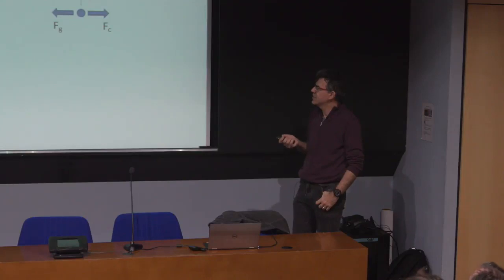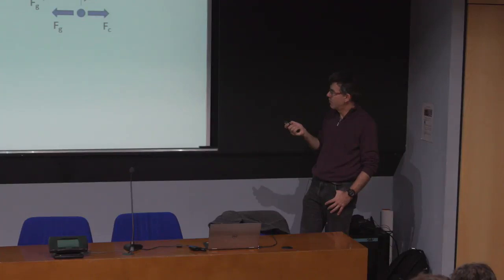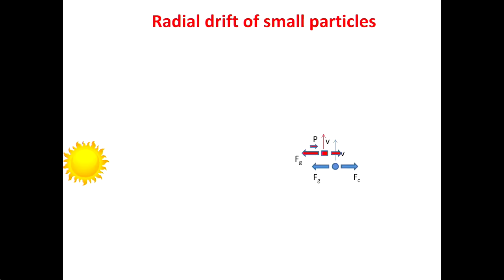Consider a dust particle in orbit around the sun moving at speed v, where the gravitational force equals the centrifugal force. A gas molecule at the same location orbits at a slightly different speed, because gas also feels its own pressure gradient. In a protoplanetary disk, density decreases with distance from the star, so there is a pressure gradient directed outward — a radial force opposing gravity. The net force on a gas element is smaller, so the gas orbits more slowly than the dust particle.